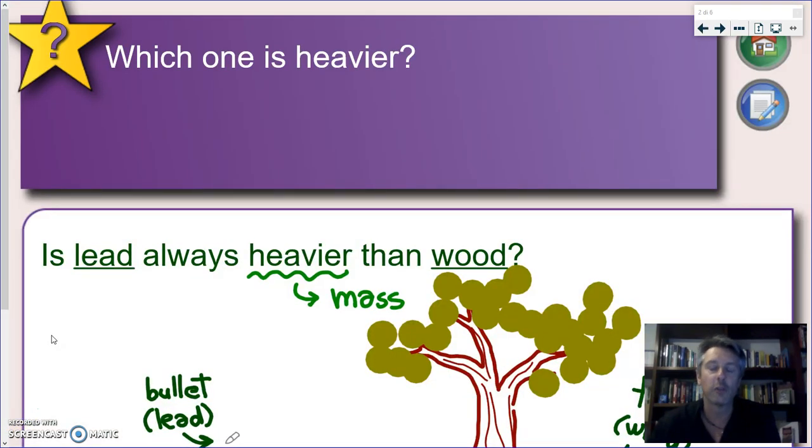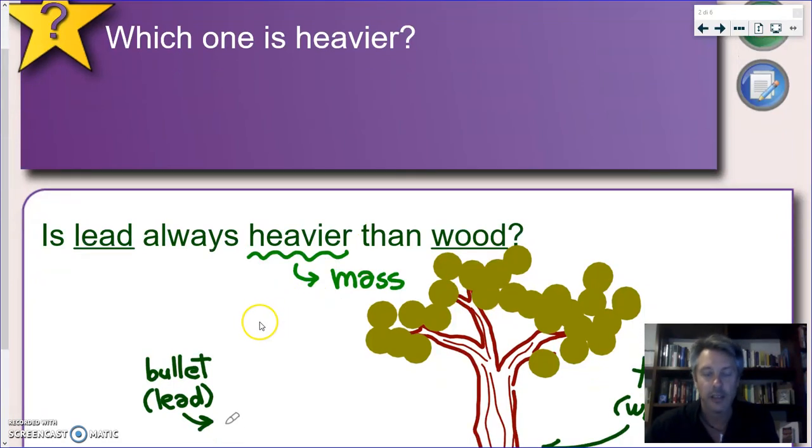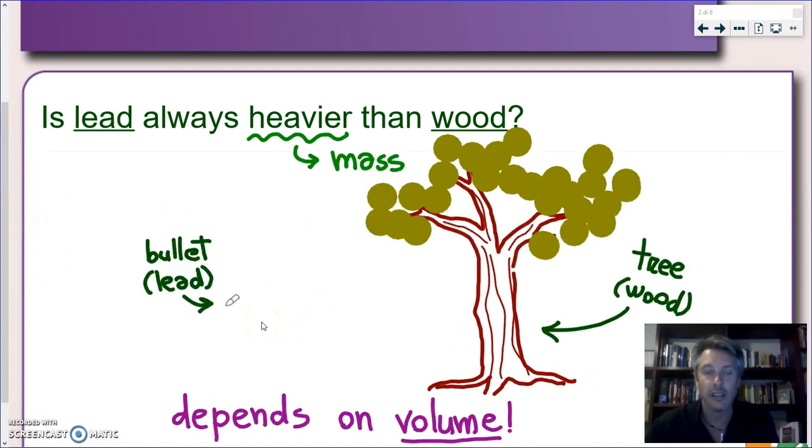To understand why we have to introduce a new physical quantity, let's get back to mass. It is common knowledge that some substances, some elements or compounds are heavier than others. Just to make an example we can think about lead which is a very heavy metal and wood. It is common knowledge that an object made of metal is heavier than an object made of wood. But is this always true? One thing we have to really stress here is that heavier normally is linked with weight, in this case we refer to mass.